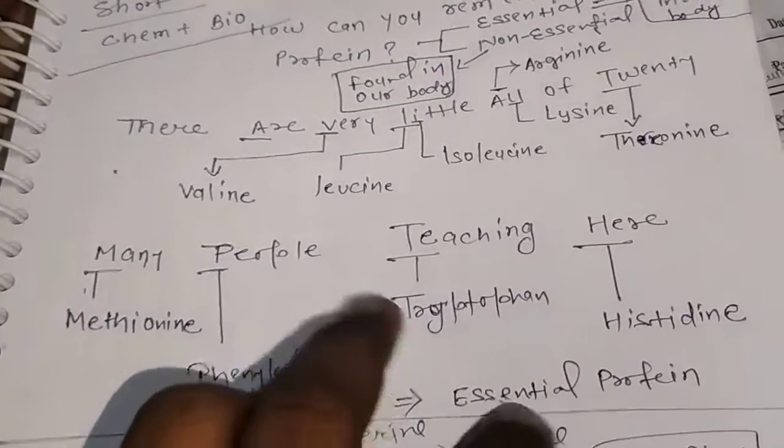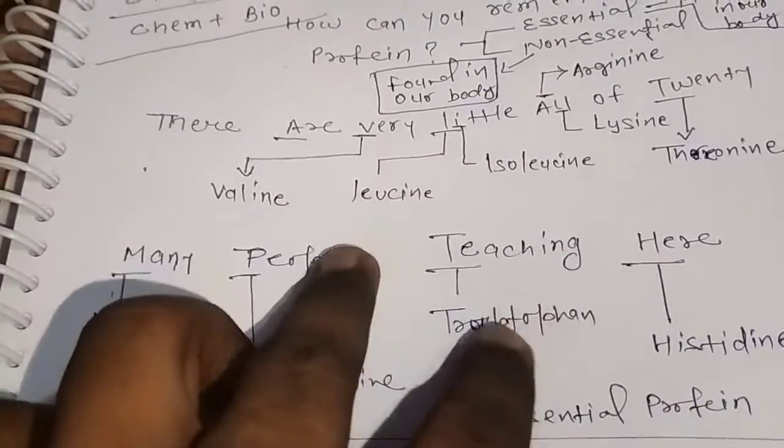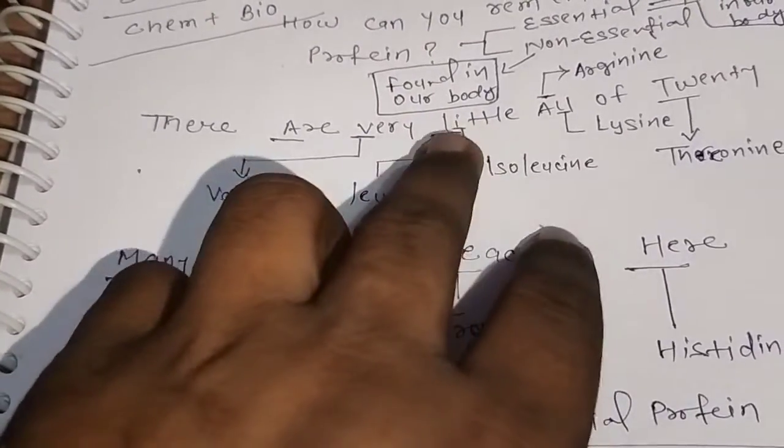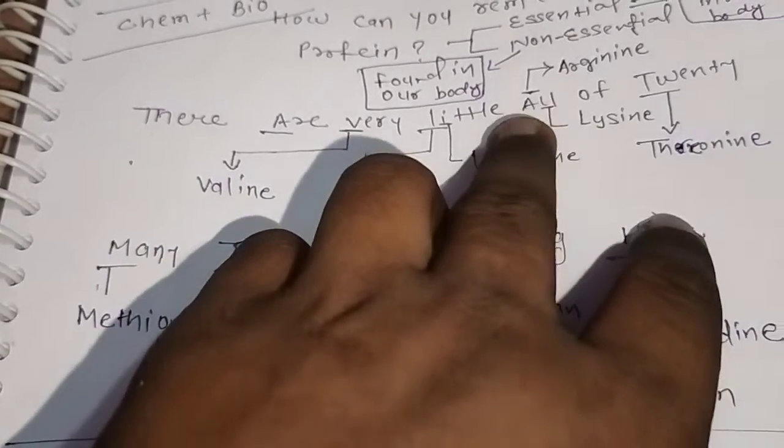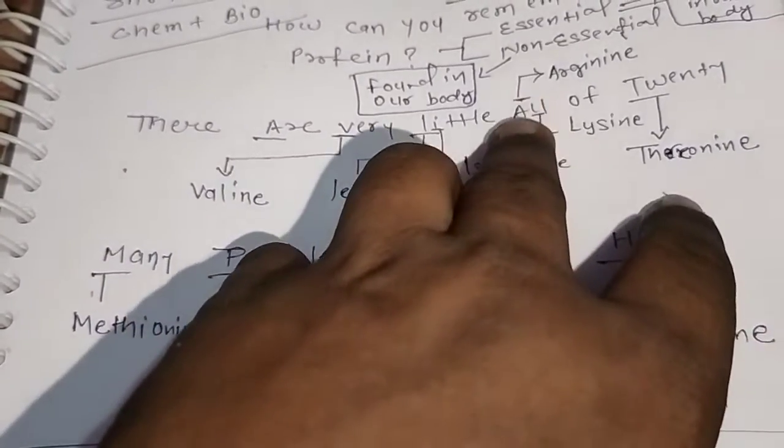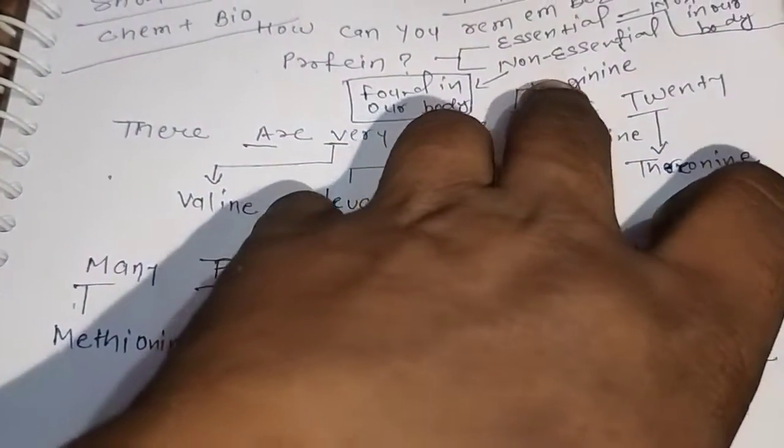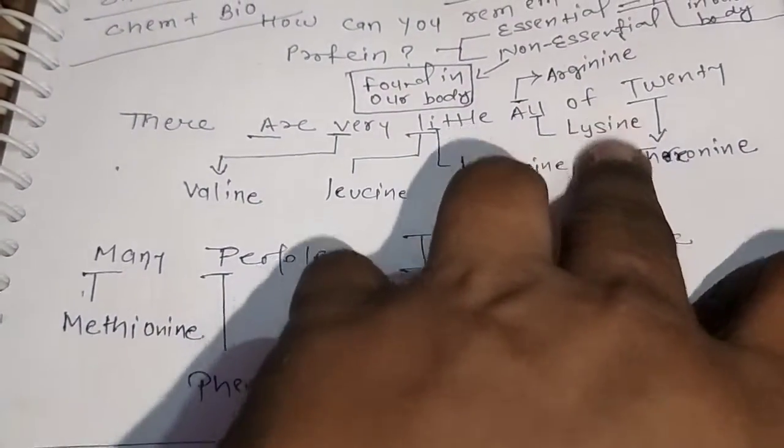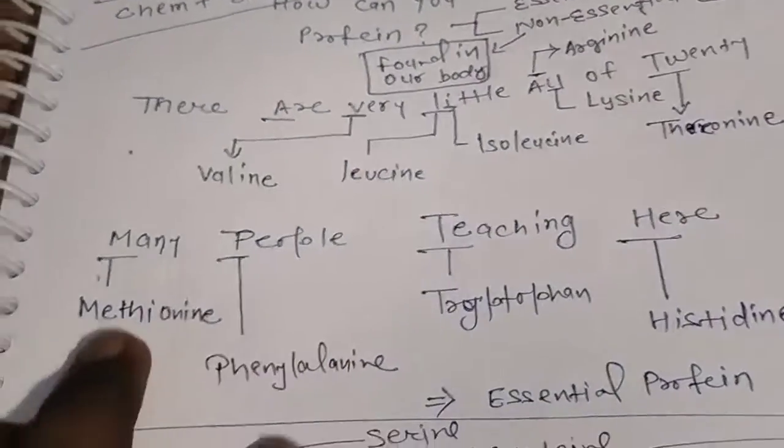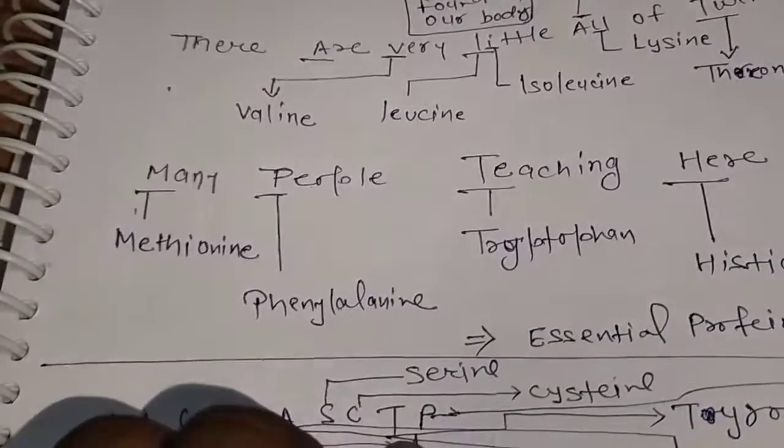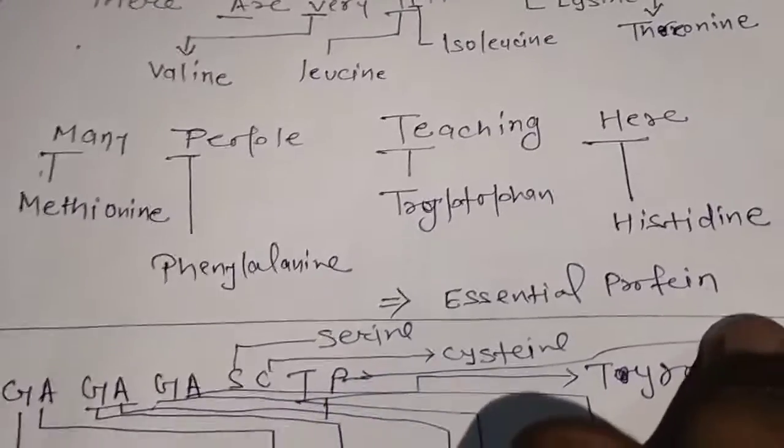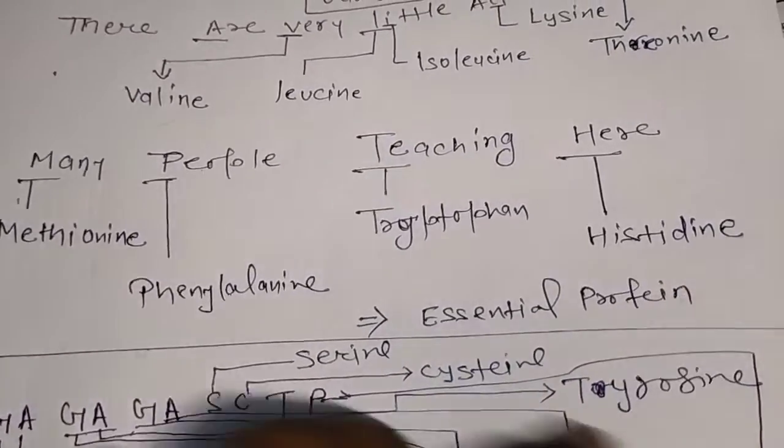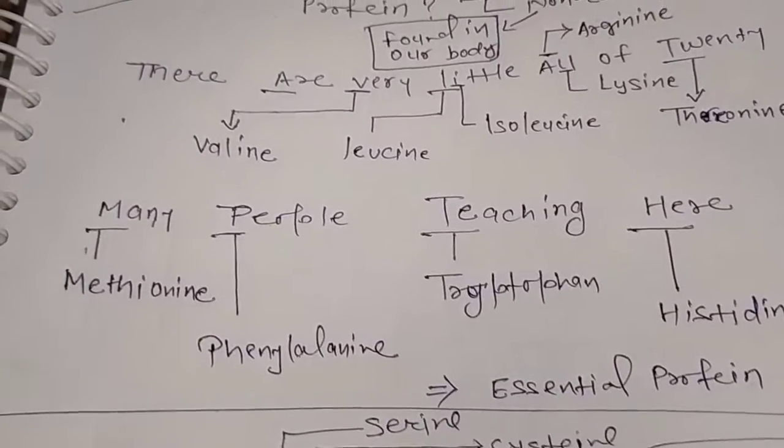V C means valine, L C means leucine, I means isoleucine, A means lysine, L means arginine, and T means threonine. M means methionine, P means phenylalanine, T means tryptophan, and H means histidine. That is the shortcut trick and you can remember all the essential proteins.